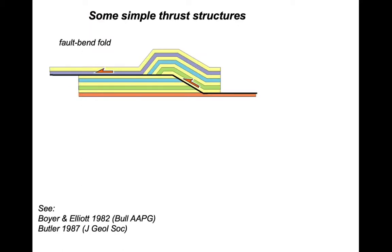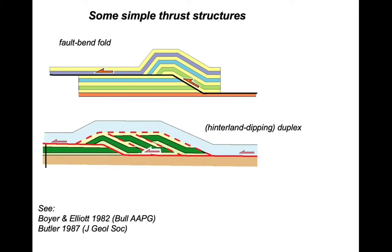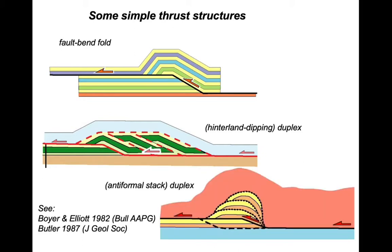So we've just looked at some very simple thrust structures in these animations. We've looked at how a fault bend fold can form simply as a consequence of a thrust climbing a staircase. And we've looked at how individual thrusts can combine to make a duplex structure. And in turn, by changing the pattern of displacement within a duplex, we can change its structure from hinterland dipping to an anti-formal stack. You can find out more about duplex systems by looking at the two references provided. I hope you found this short video useful for developing understanding of thrust systems.